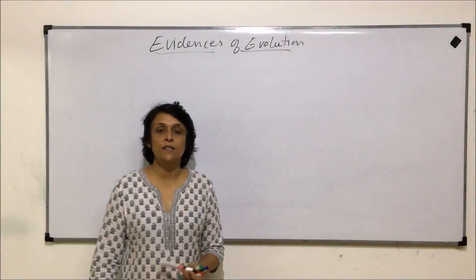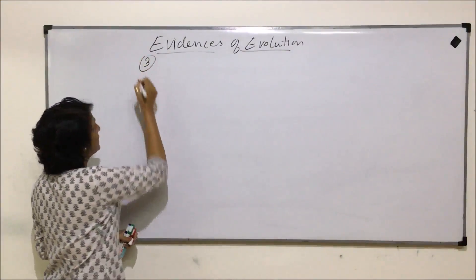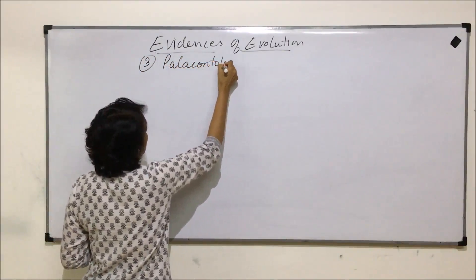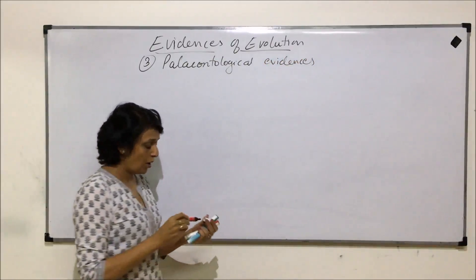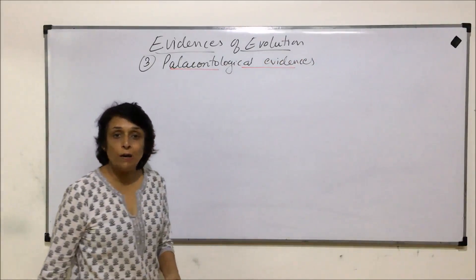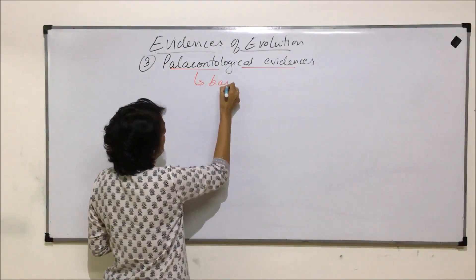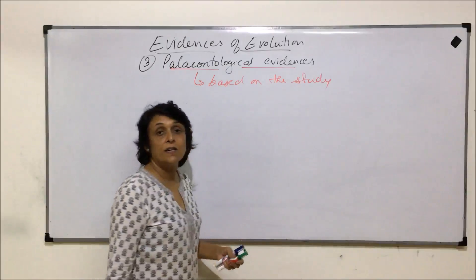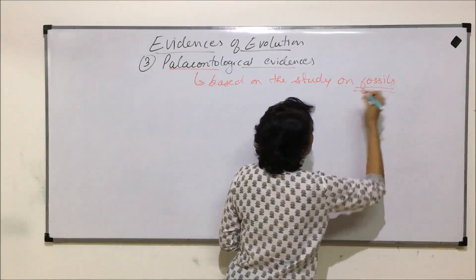In this video we will be starting with the next category of evidences. This is our third category, that is paleontological evidences. Paleontological evidences are based on the fossils that we have found. It is based on the study which is done on fossils.